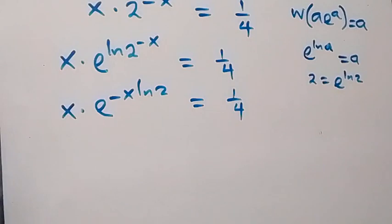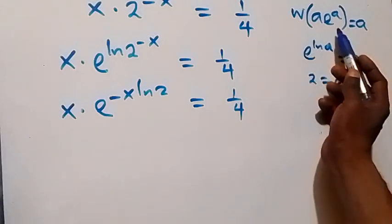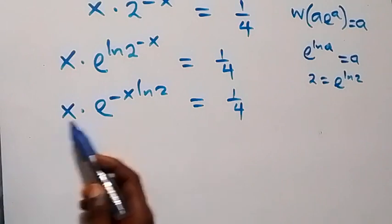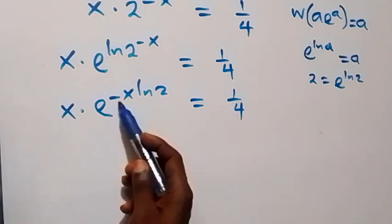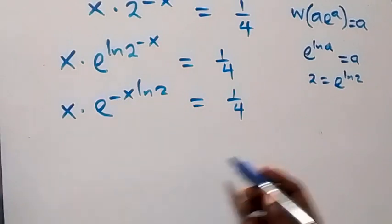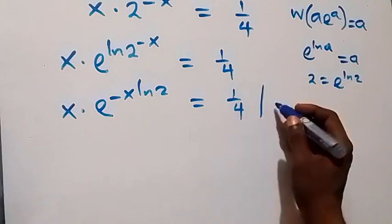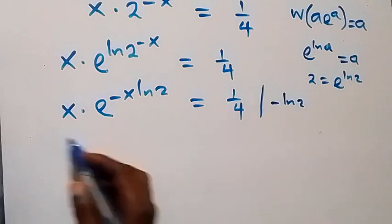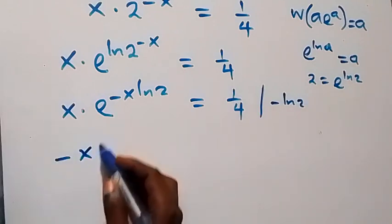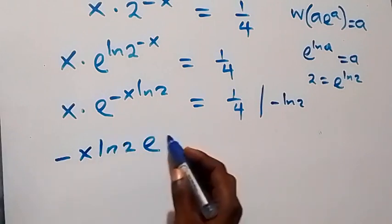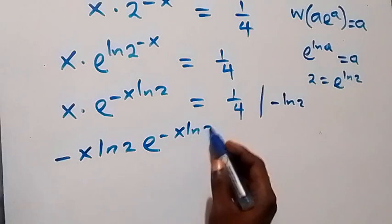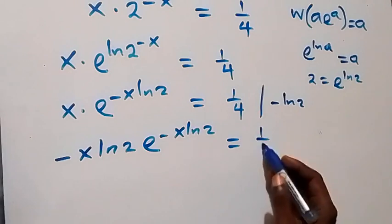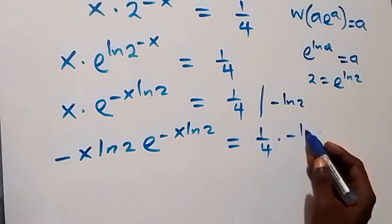Since we want to use the Lambert W format, the power and the coefficient must be equal. We have x here and minus x·ln2 in the exponent — the difference is the factor minus ln2. So let's multiply both sides by minus ln2. Then here we have minus x·ln2 times e^(minus x·ln2), which equals 1 over 4 times minus ln2.